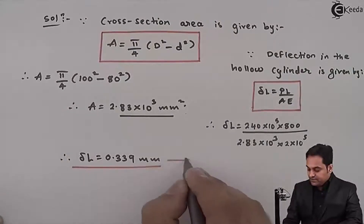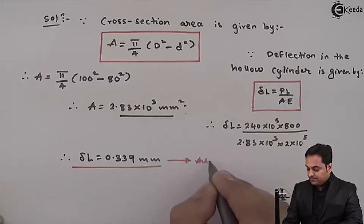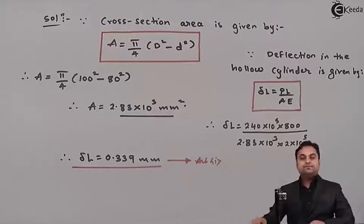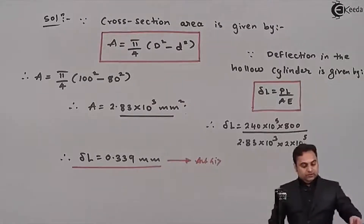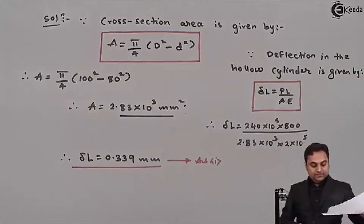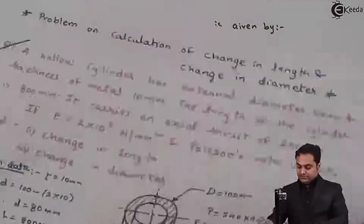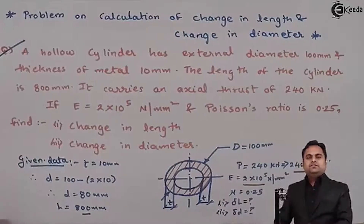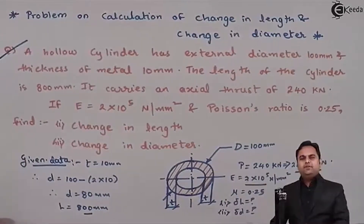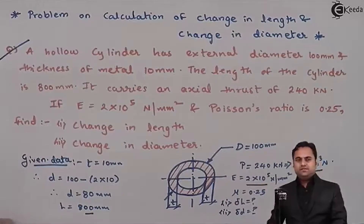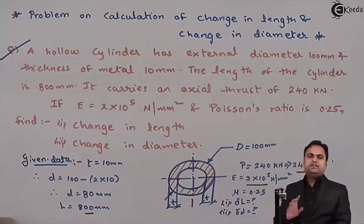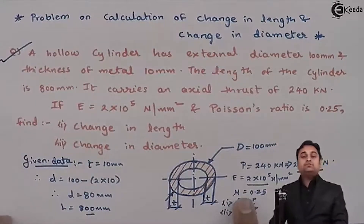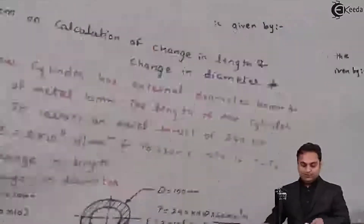This is our first answer: change in length = 0.339 mm. Now the second question is change in diameter. This change in diameter will be obtained via lateral strain, which involves Poisson's ratio μ.